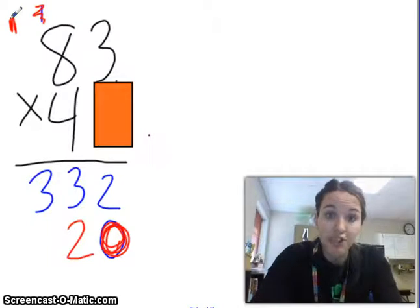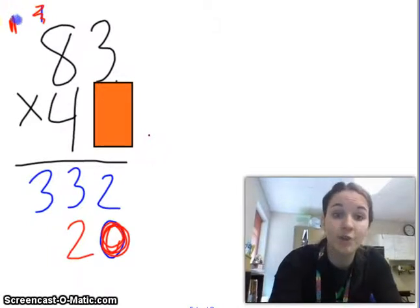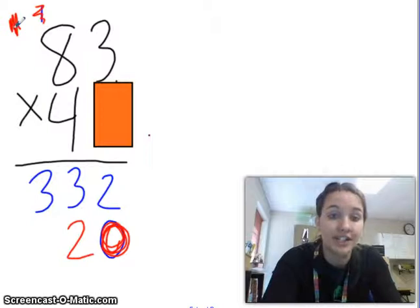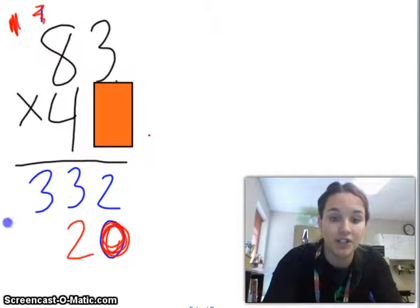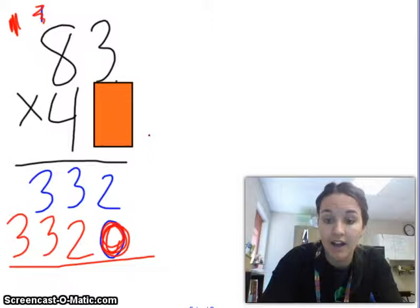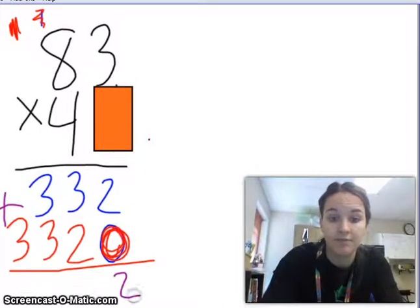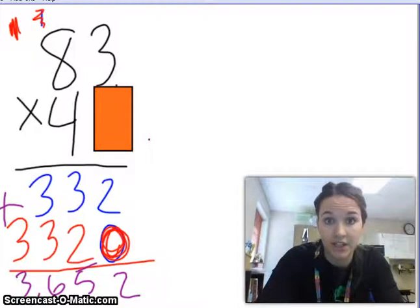33 tens is the same as 3,300. So, I need to show 3,300. Once I have my two partial products, I can go ahead and put them together and get my final product, 3,652.